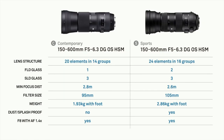Here's an abridged comparison diagram covering the things people are most commonly interested in. The lens structure has 20 elements in 14 groups in the Contemporary version, and 24 elements in 16 groups in the Sport. That adds up to a bit more weight: the Sport comes in at 2.86 kilograms, while the Contemporary is 1.93. The added weight of the elements and build quality will matter to some shooters. For FLD glass, the Sport has two elements compared to just one in the Contemporary, and both have the same SLD optics.